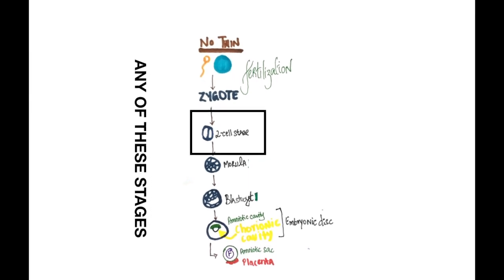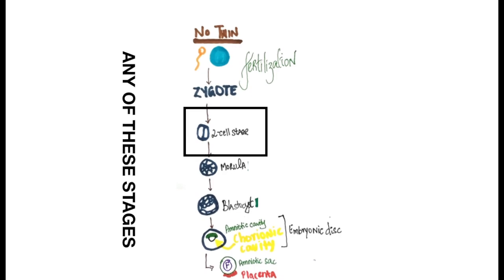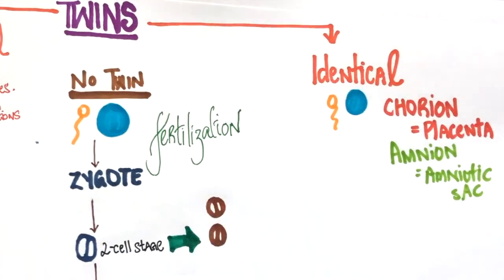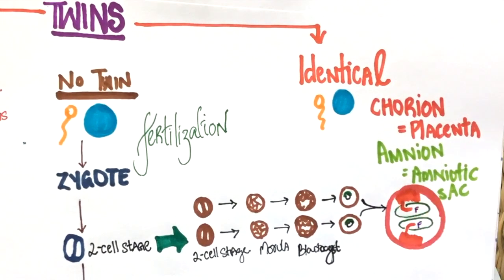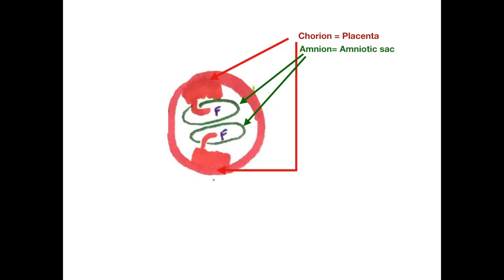If cleavage takes place at the two cell stage, there will be two morula and two blastocysts formed. These will go ahead to get implanted. There will be two placentas and two amniotic sacs, one for each baby. So this is dichorionic diamniotic.